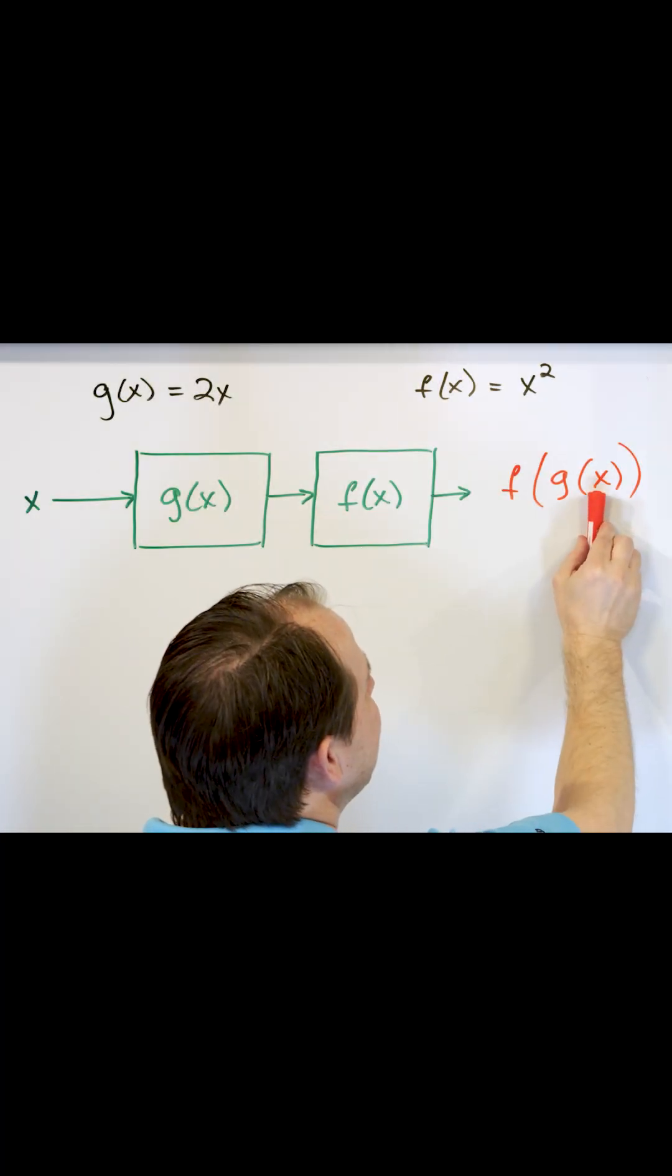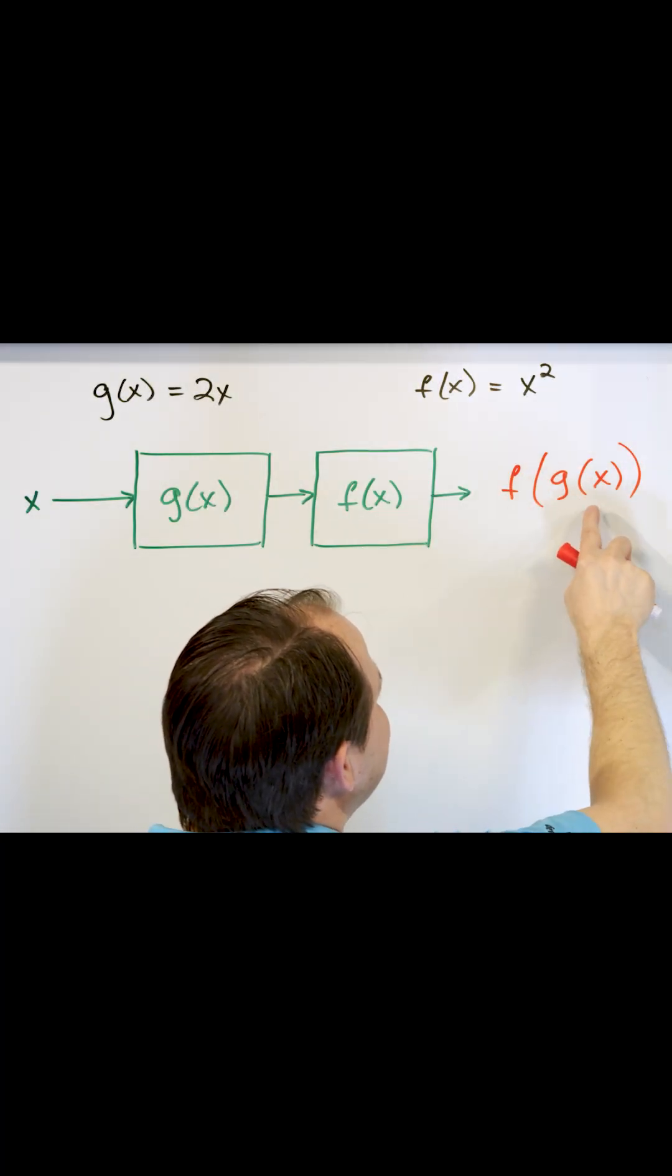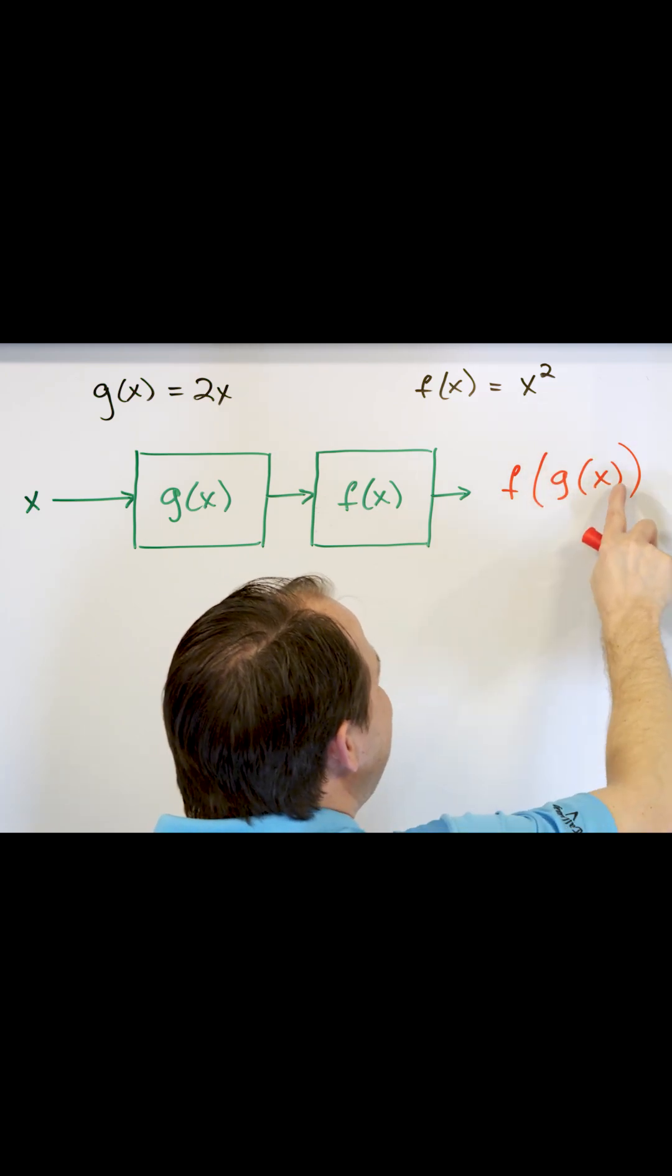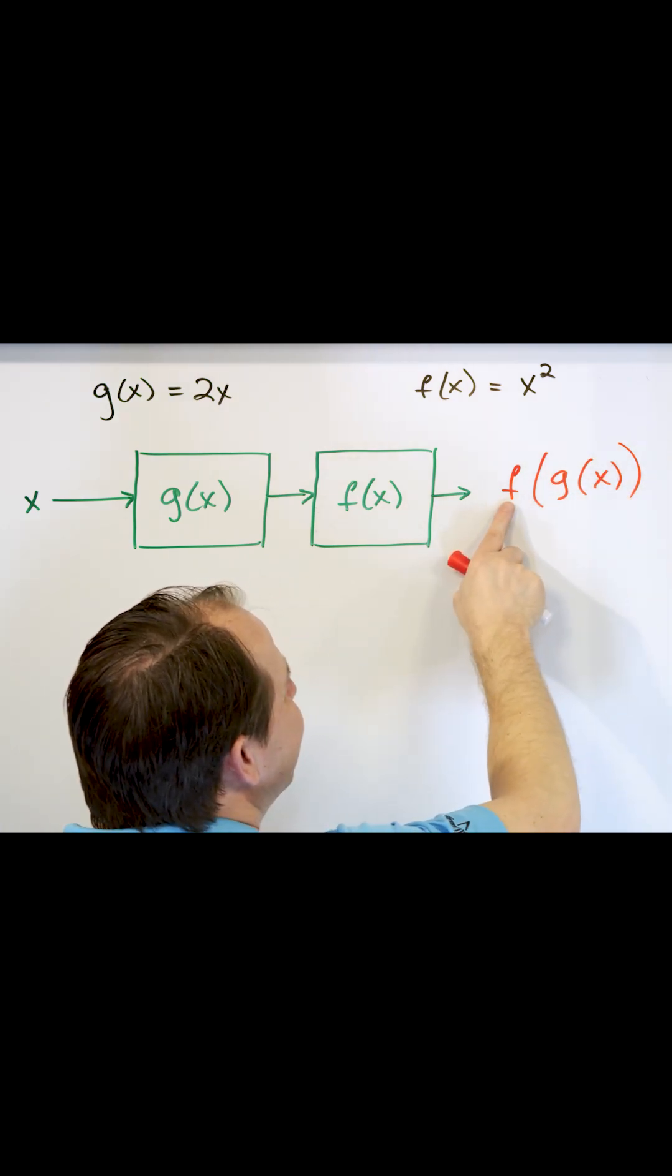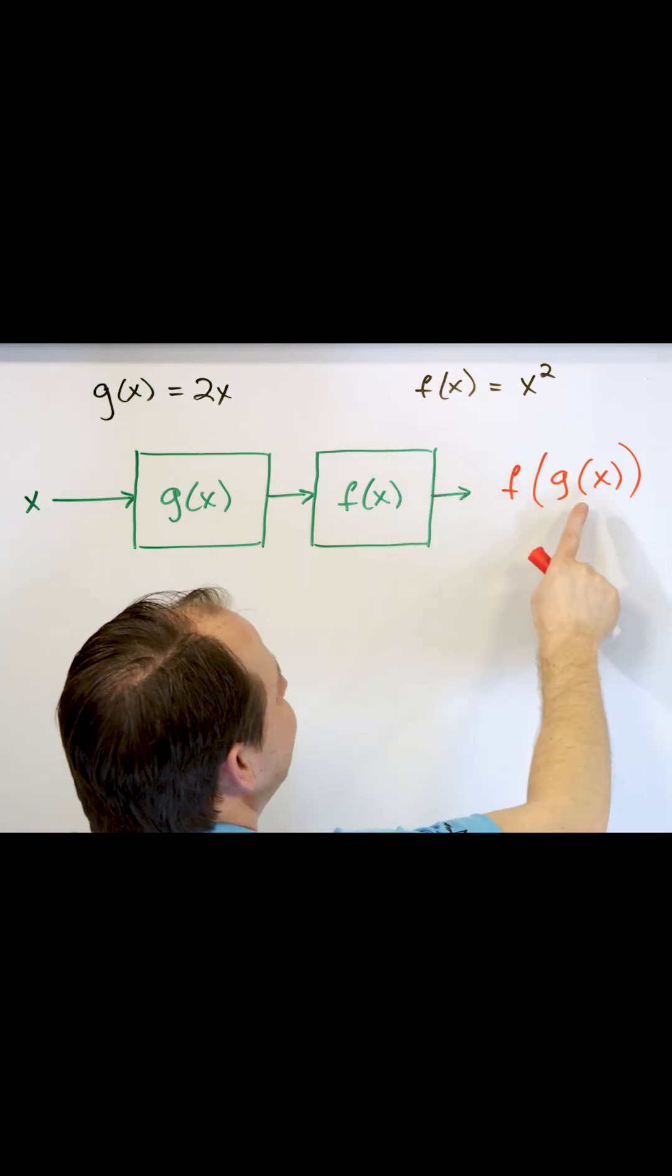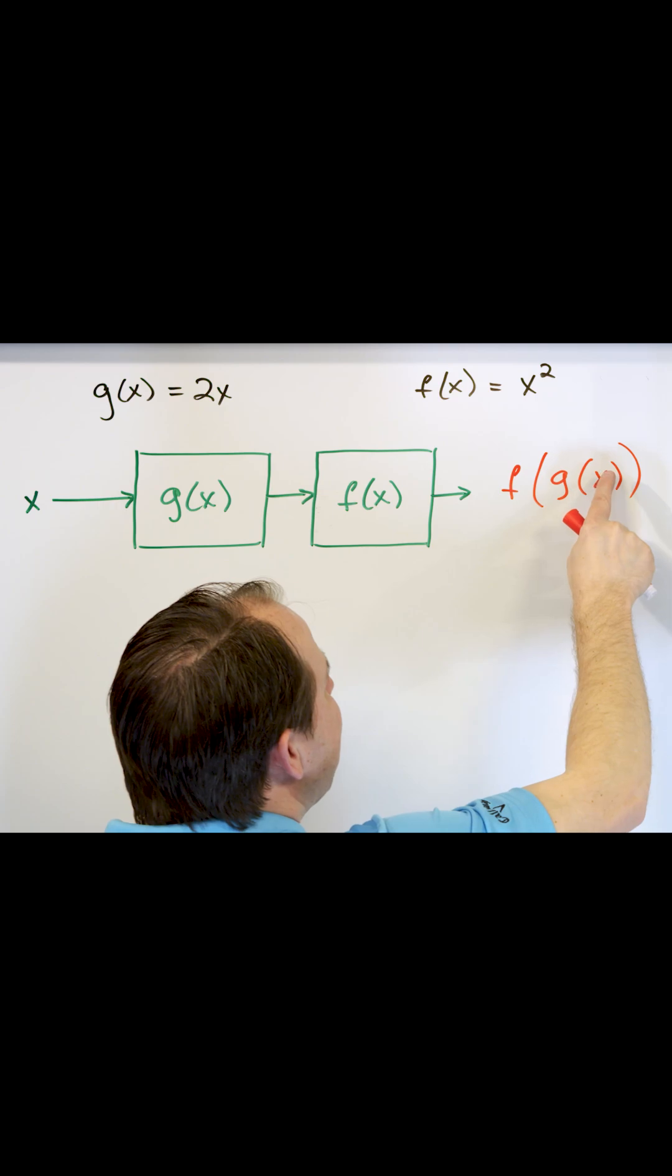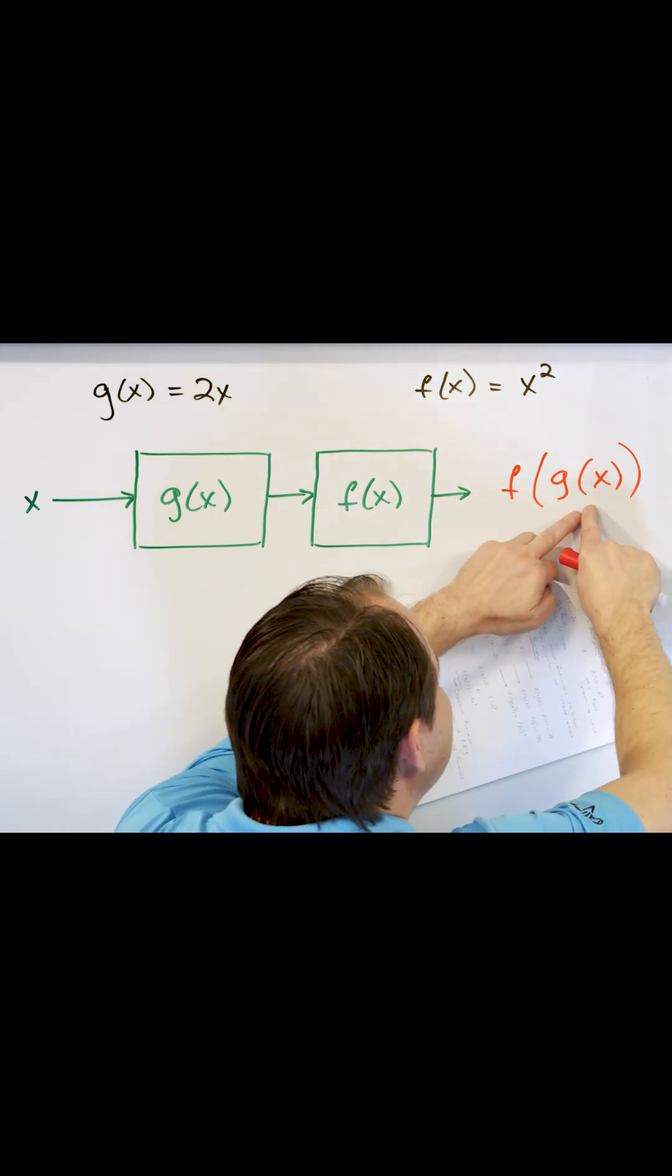You have to put the value into the innermost function first, evaluate the answer. But whatever you get out of that is what is sent into the f function. Because remember f of x, whatever's in here gets passed to the f function. So first you evaluate g, you get an answer, and you stick it into the f function, go from inside to outside.